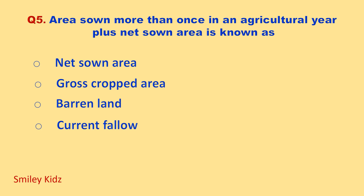Area sown more than once in an agricultural year plus net sown area is known as? Your options are: net sown area, gross cropped area, barren land, current fallow. Your time starts now.